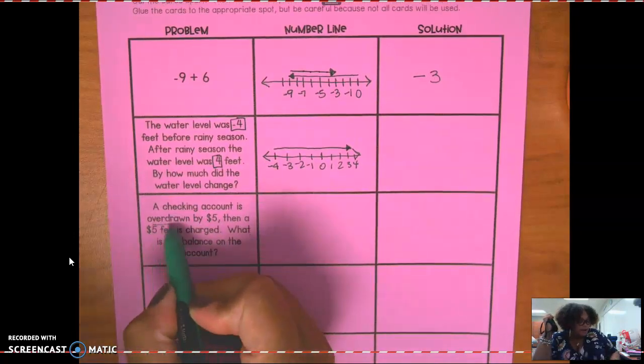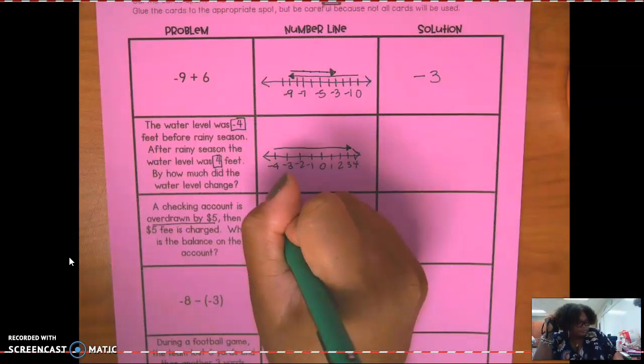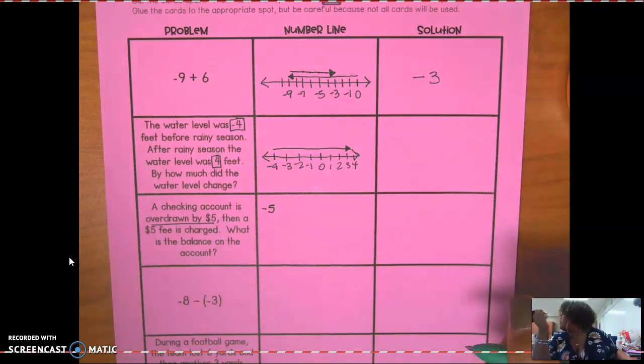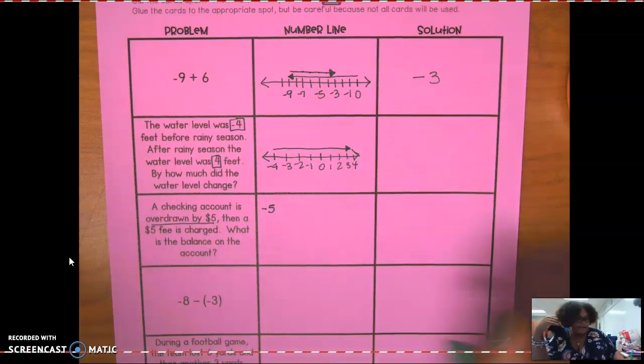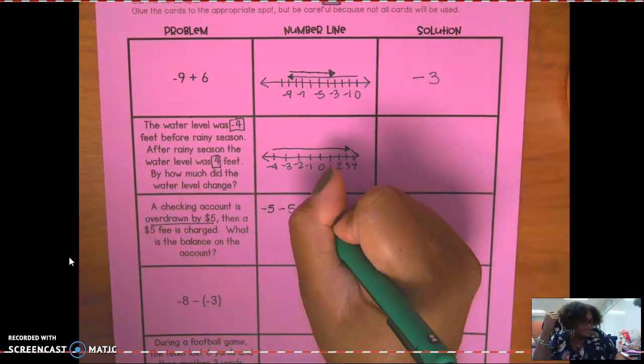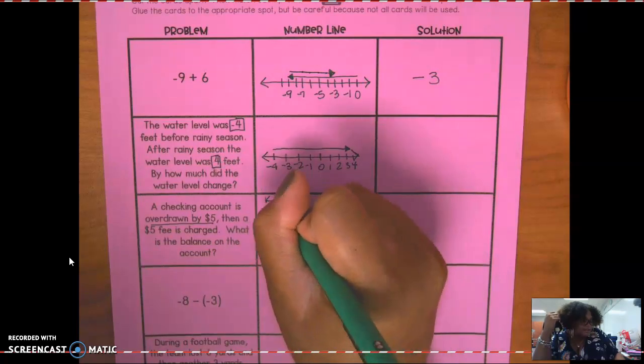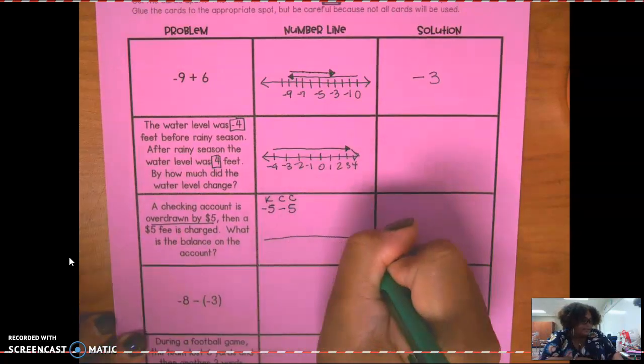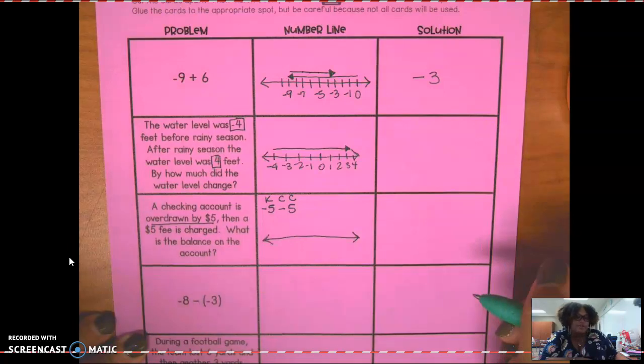Here overdrawn by $5 means negative five. Then a $5 fee is charged. That means I have to take away five more dollars. How do I represent taking away five more dollars? A negative what? A negative five. And in order to solve this, don't forget to keep change change. I need y'all to stay focused because you're going to have to do this on your own on Friday. And then I need to draw a number line that represents that. I highly advise you to draw the number line first before gluing it down.